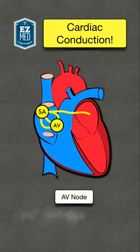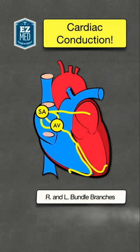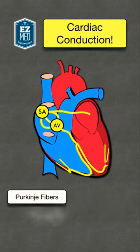The action potential then arrives at the AV node where it slows down temporarily. The electrical impulse then travels to the ventricles through the bundle of His, followed by the right and left bundle branches, and finally the Purkinje fibers.